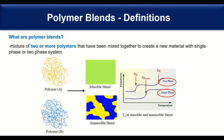So what are polymer blends? Usually we have the mixture of two or more polymers to create a new material with a single phase or a two-phase system. So we have polymer A, we have polymer B, they get mixed together and create a single phase system.